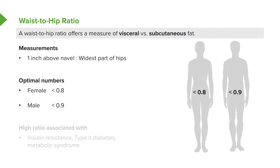These numbers vary from source to source, but in general it's assumed that optimal numbers are about 0.8 for women and 0.9 for men, because men generally have narrower hips. I wouldn't recommend committing those to memory specifically — just keep in mind that a ratio over one is probably less than optimal.